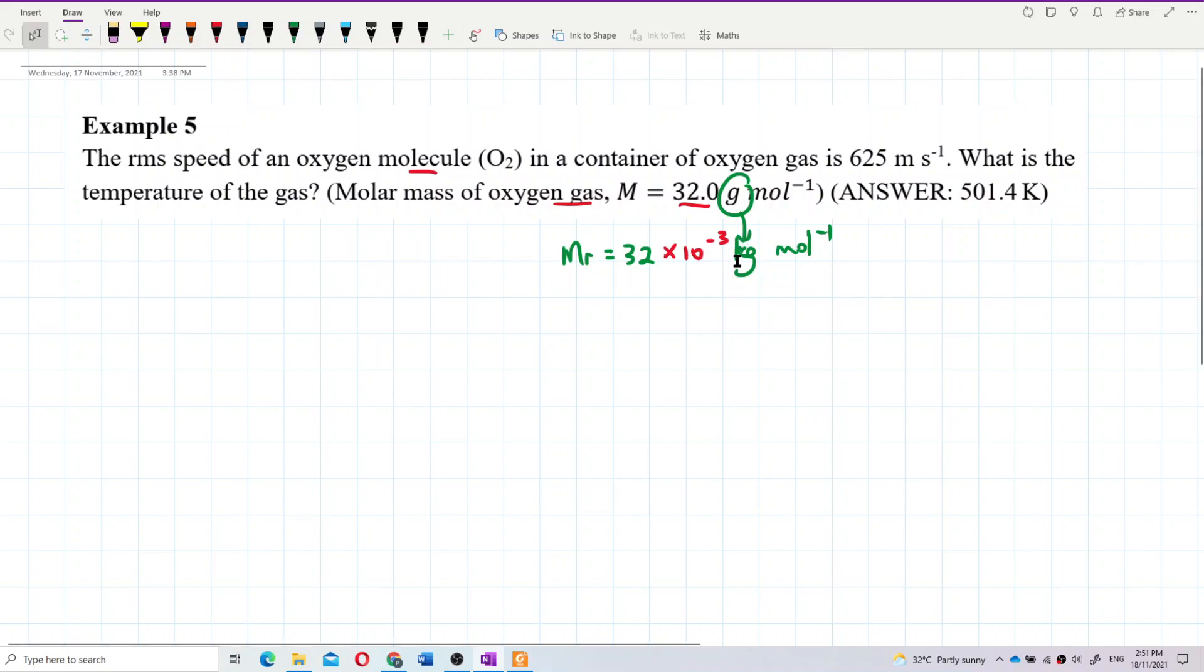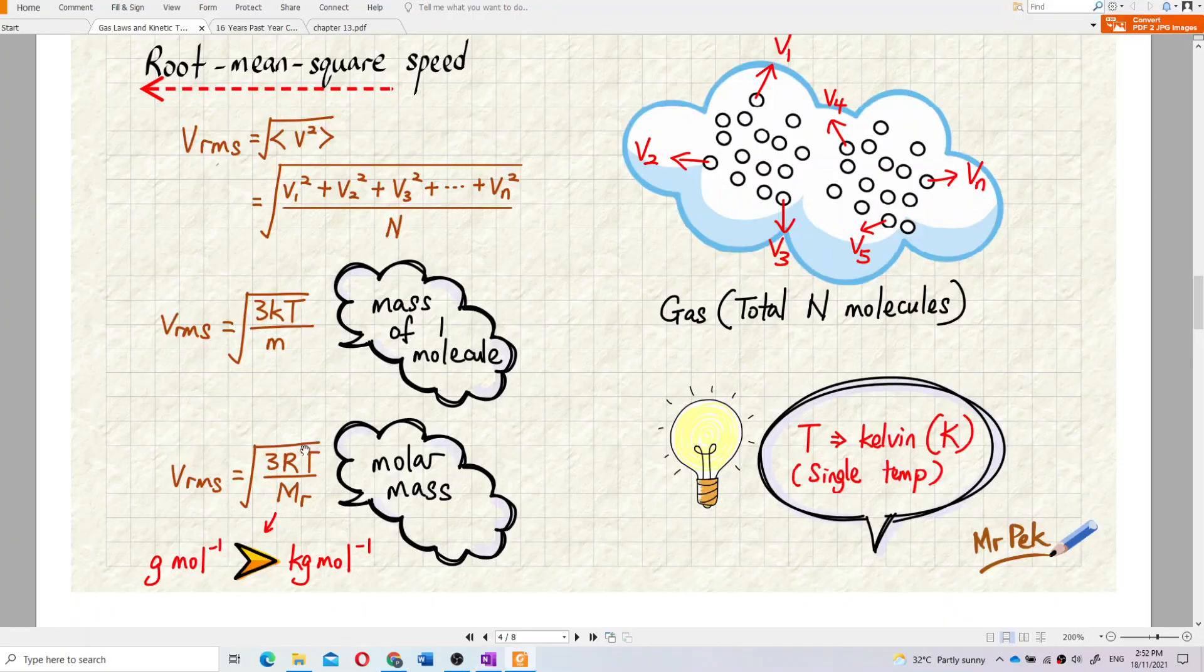That's the molar mass of oxygen gas. Now we want to find the temperature. We're given root mean square speed, so this is the v_rms. We can use this formula.